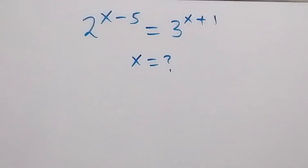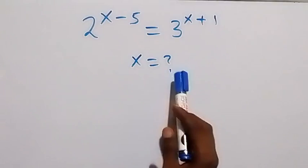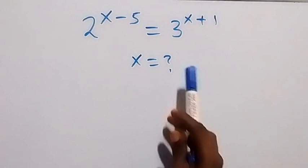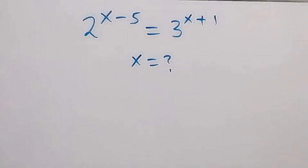Hello, you are welcome. How to solve this nice exponent equation. We have 2 raised to power x minus 5 equals to 3 raised to power x plus 1. We have 2 methods here. Let's look at the first method.